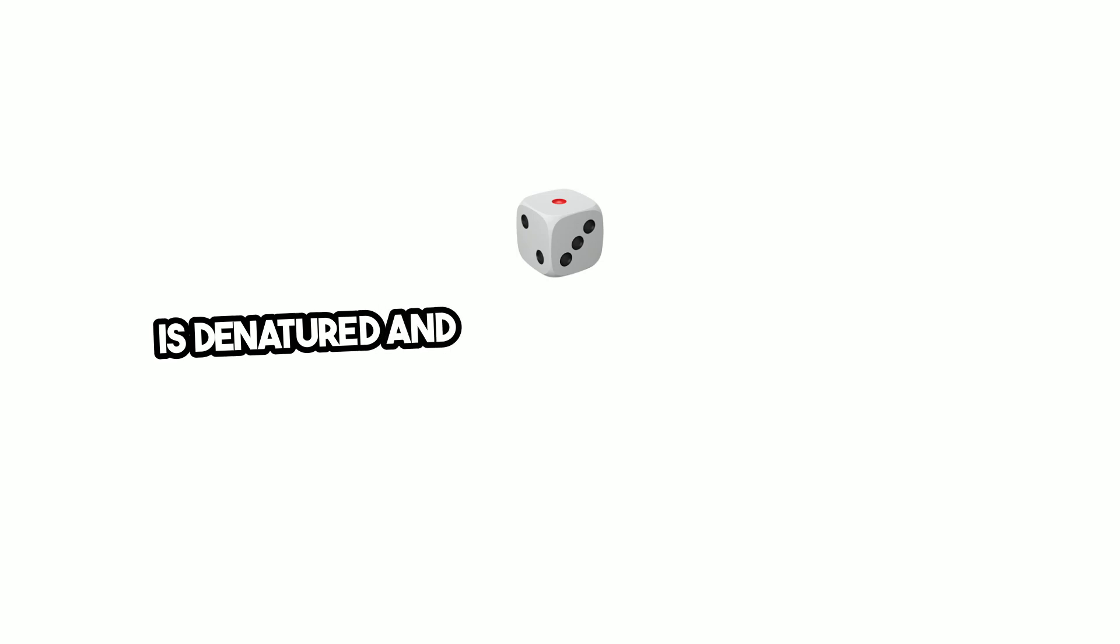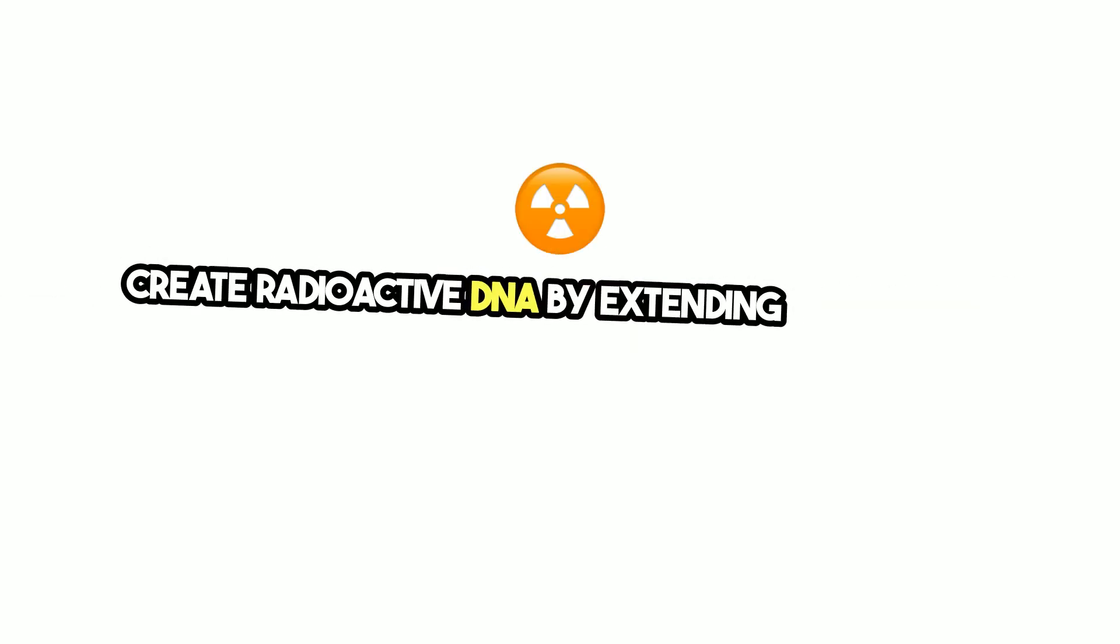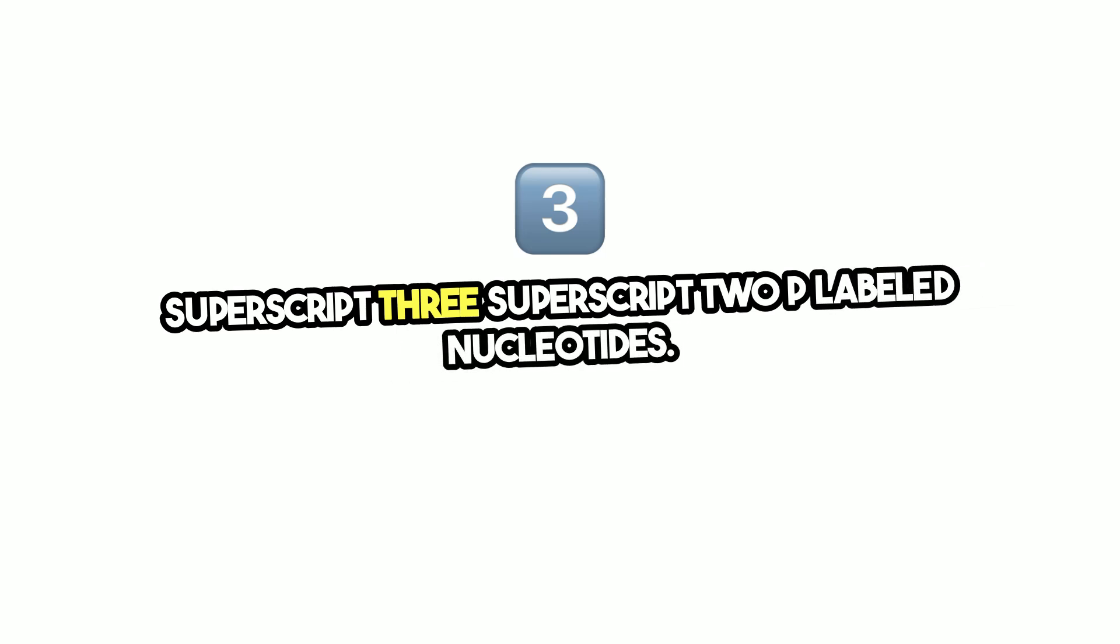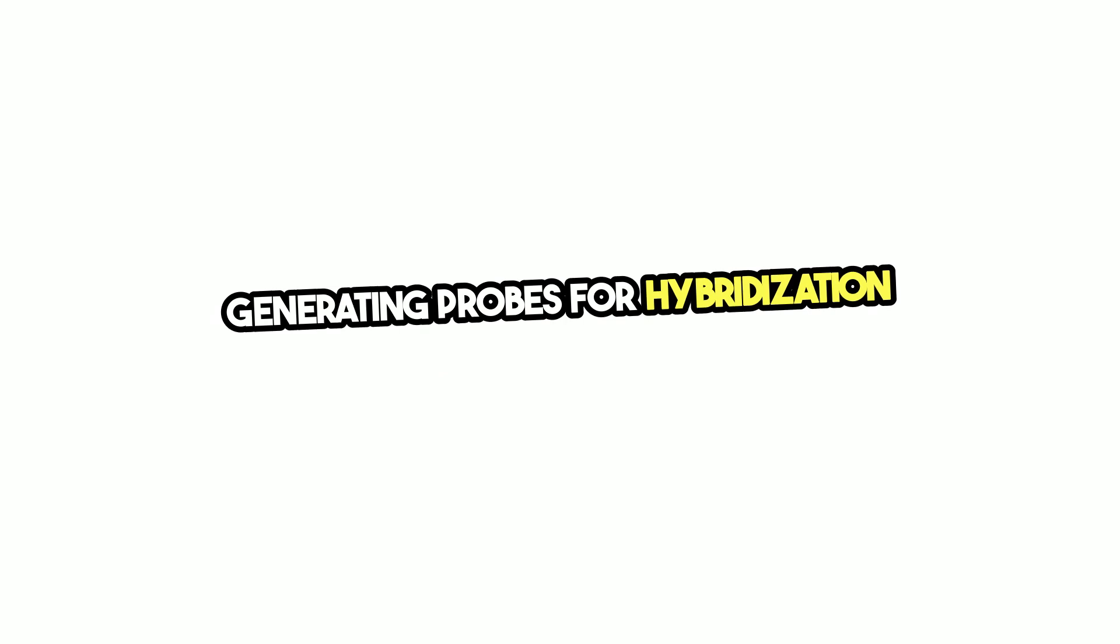3. Random primer labeling. Here, a DNA template is denatured, and random primers are used to create radioactive DNA by extending the primers with ³²P-labeled nucleotides. This is often used for generating probes for hybridization experiments.